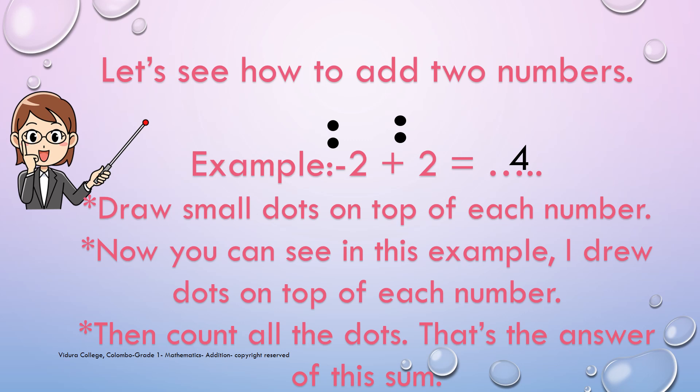Children, we learnt Addition only using pictures. Now we want to learn how to do Addition using numbers. Let's see how to add 2 numbers. Look at this example: 2 plus 2 is equal to — you have to find the answer. First, draw small dots on top of each number. Now you can see in this example I drew dots on top of each number. Then count all the dots. That's the answer of this sum. 2 plus 2 is equal to 4.